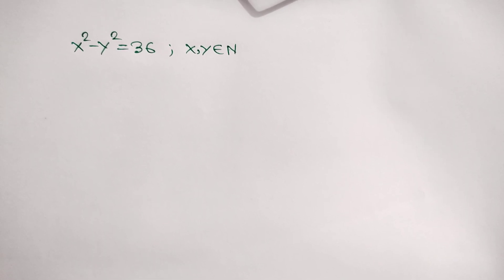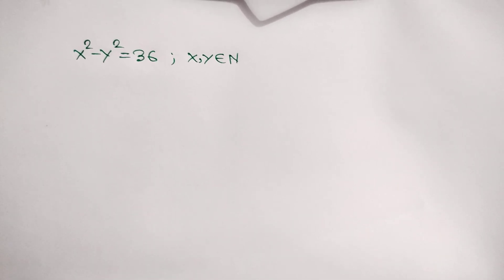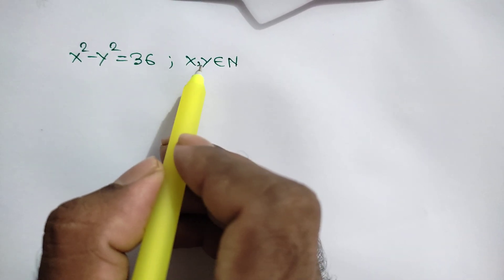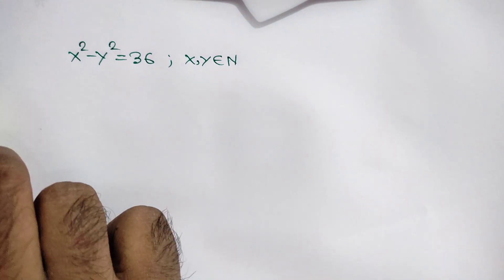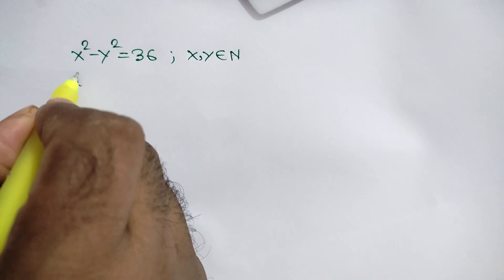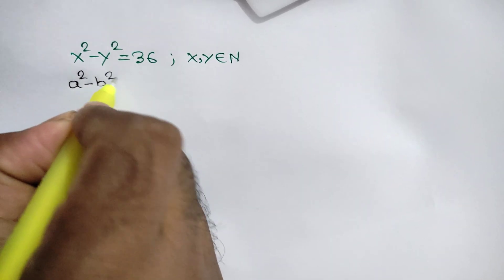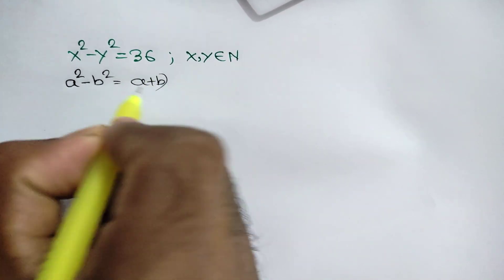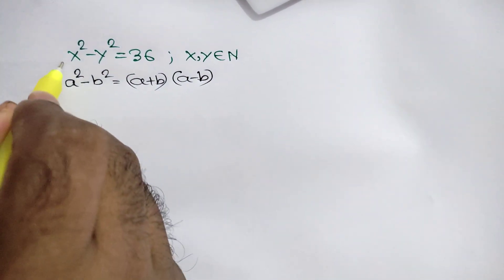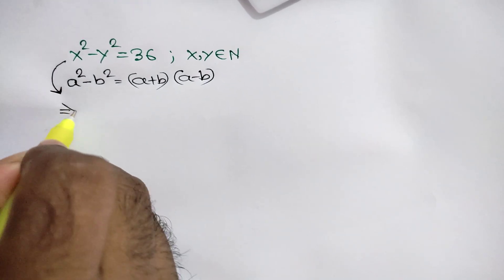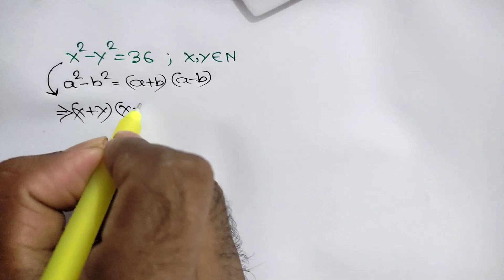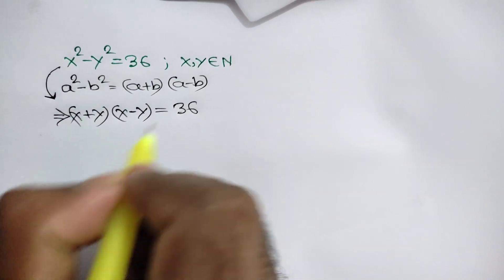Hi everyone. In this video I am going to show how to find the value of x and y, where x squared minus y squared is equal to 36 and x and y are natural numbers. We know that the algebraic identity a squared minus b squared is equal to a plus b times a minus b. Applying this rule, we can write x plus y times x minus y is equal to 36.